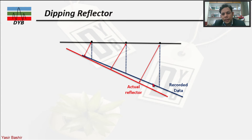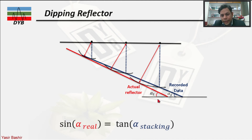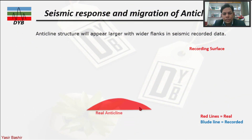When we correlate these recorded points, we get a reflector shown in blue, while the actual reflector is shown in red. The wavefront passes through multiple possible reflection points, so we need velocity information of the medium to plot the recorded time at the true position. From this we can also find the angle — the true dip alpha-t and the apparent dip alpha-s — and that is why we need seismic migration to move the dipping reflector from the recorded position to its true position.